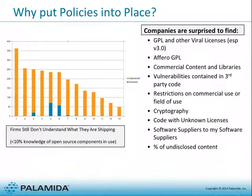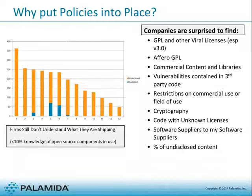Companies are putting into place license and component policies because they're finding they're using a lot more open source and third-party software than they thought. When Palameda goes out and looks at a typical code base, we always ask customers what they think they have before we do our reviews. Afterward, we typically find anywhere from double to 100 times more than they expected, with a very common multiplier being 10 to 20 times more than they knew. This has been true as long as we've been looking, and it's getting worse as people use even more open source.